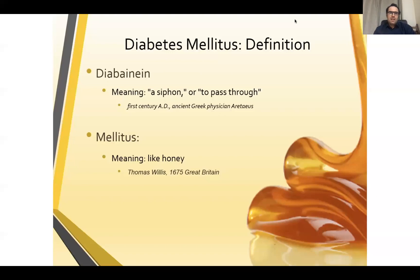The word 'diabetes mellitus' originates from two different words: 'diabenin,' which basically means to pass through or a siphon, and 'mellitus,' which means like honey. Together, both words essentially mean sweet urine. In the old days, people used to taste the urine, and if it was sweet, they would diagnose diabetes mellitus.